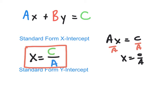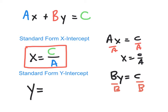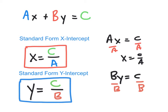Similarly, to find the y-intercept we plug in zero for x, which gives us by equals c. Dividing both sides by b gives us y equals c over b. That is the formula for the standard form y-intercept: y equals c over b. Please add that to your list. So if you want the y-intercept from standard form, you do c divided by b.